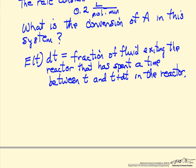E of t times dt, looking at some sliver in this diagram, represents the fraction of fluid that's exiting the reactor that has spent the time between t and t plus dt in the reactor. If we integrate E of t dt from 0 to infinity, all these fractions should add up to 1. We're going to take advantage of this now to put a scale on the plot that's given.